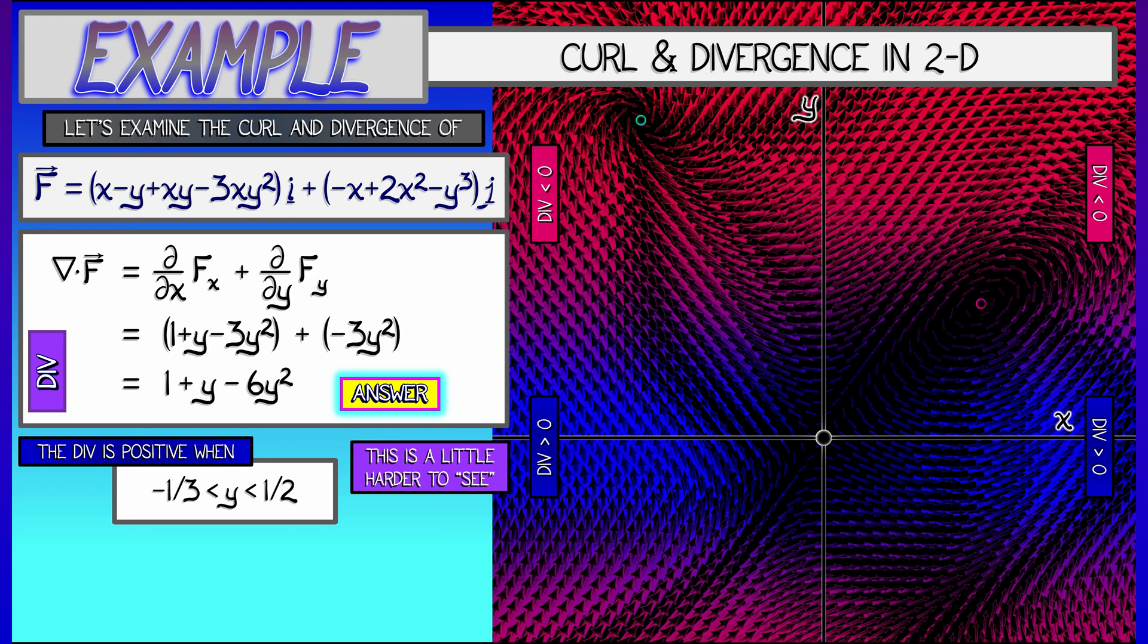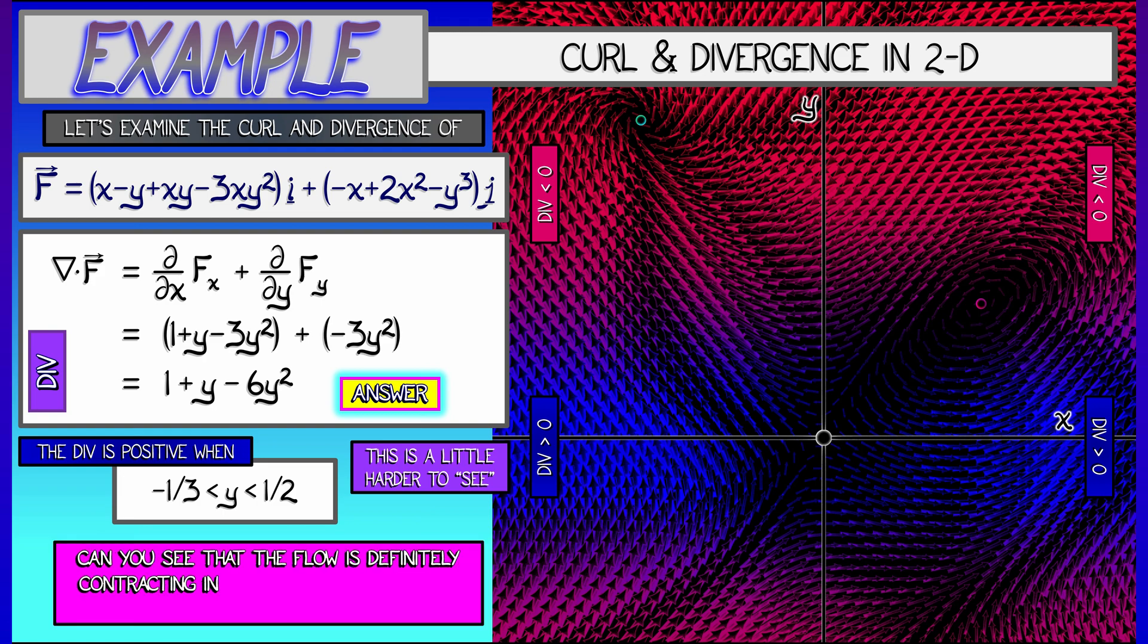Now it's a little bit hard to see that the vector field is indeed expanding locally in that strip, but it's a little bit easier to see that outside that strip, where the divergence is negative, in the upper left-hand corner in particular, we've definitely got some area contraction going on in that vector field.